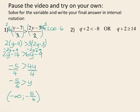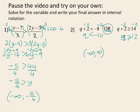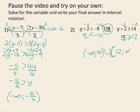Question 2 is an 'or' compound inequality: either q plus 2 is less than negative 8, or q plus 2 is greater than or equal to 14. Solve each separately. Subtracting 2 from both sides of the first gives q is less than negative 10. Subtracting 2 from the second gives q is greater than or equal to 12. In interval notation, these are two separate intervals joined by the union symbol: negative infinity to negative 10 with round brackets, union 12 with a square bracket to positive infinity.